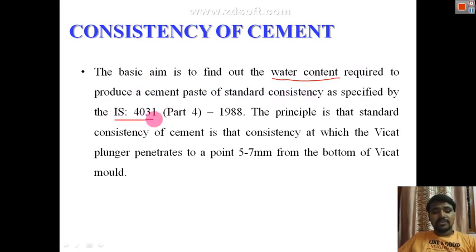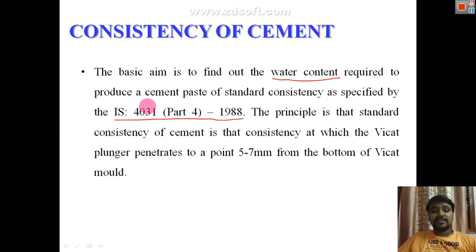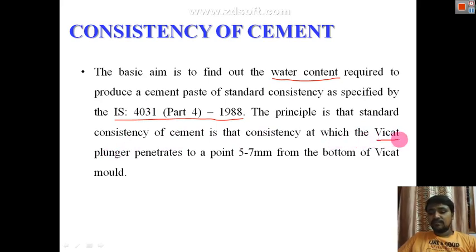The basic aim is to find out the water content required to produce a cement paste of standard consistency, as specified by IS code IS 4031 Part 4, 1988. The principle is that the standard consistency of cement is that consistency at which the Vicat plunger penetrates to a specified depth.